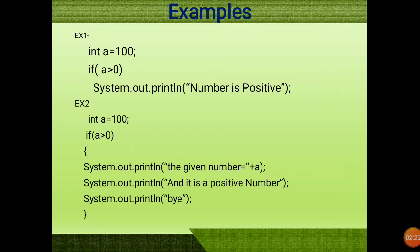Now in the second example, int a = 100. Again I have taken 100. Since a is greater than 0 — 100 is greater than 0 — and it prints 3 statements, I have to keep these 3 statements within curly braces. So here 100 is greater than 0, the output of this example is: 'the given number is 100, it is a positive number'.